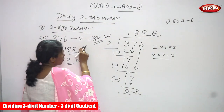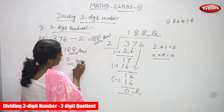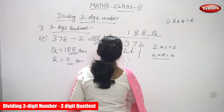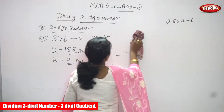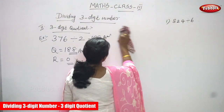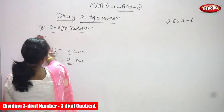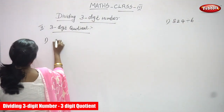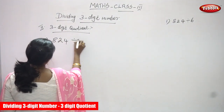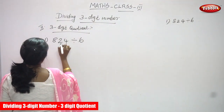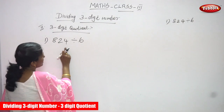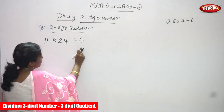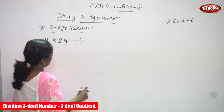So 376 divided by 2, the answer is 188 — a 3-digit quotient. I think you understand the sum clearly. Now we are going to do the next sum. The example is: 824 is divided by 3. This is a 3-digit number divided by a single-digit number. Now you can get a 3-digit quotient. Let's start this sum.